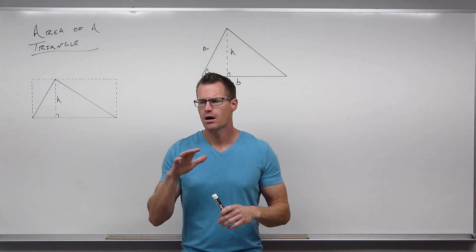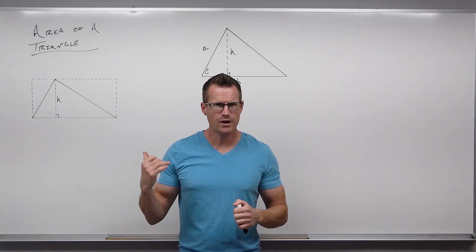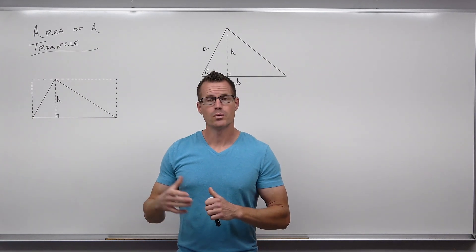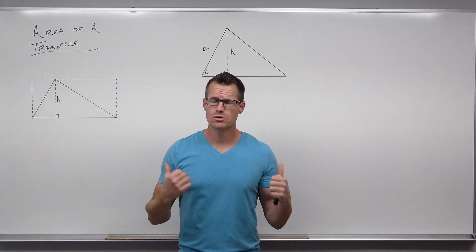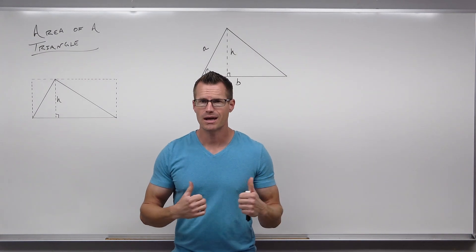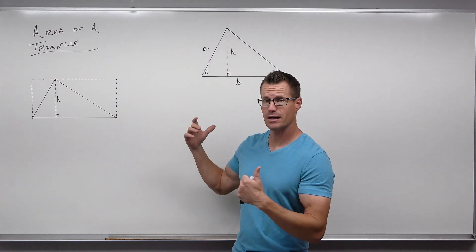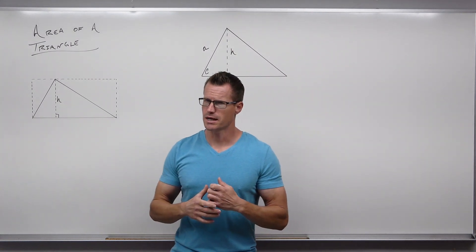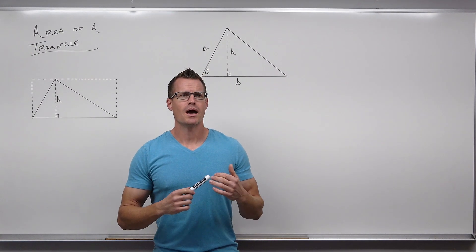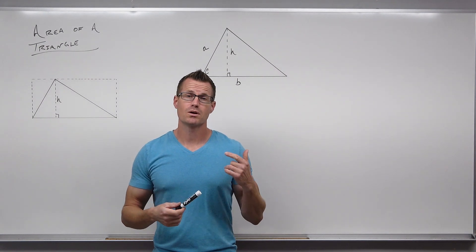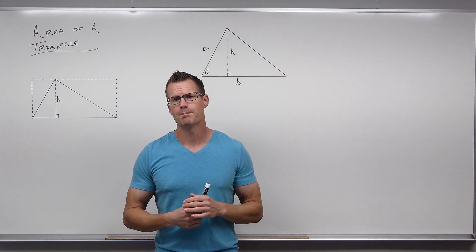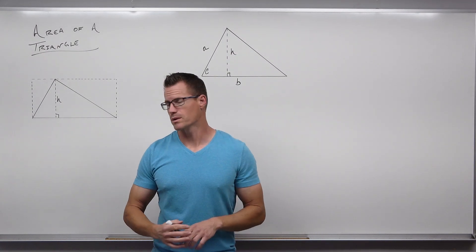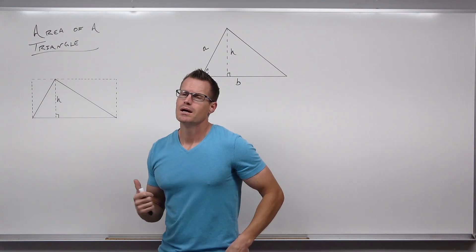We'll cover a few things: we'll prove the area of a triangle quickly, do a substitution to find the area if you know two sides and an angle between them, and then use Heron's formula to find the area if you know all three sides.